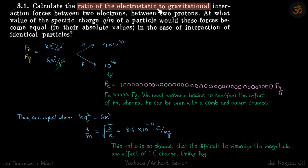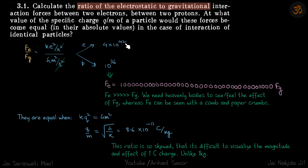Calculate the ratio of electrostatic to gravitational force in the case of electron and proton. That should be kq² / r² divided by Gm² / r². In both cases the charge term will be e², but mass will vary. Putting in the constants and values of charge and masses, the ratio for an electron is 4 × 10⁴², and for a proton it is 10³⁶.